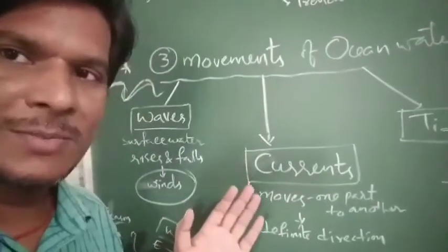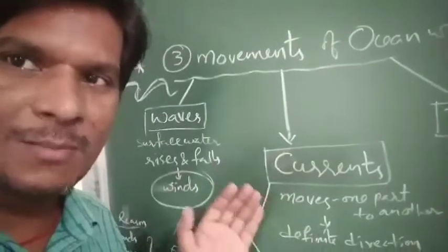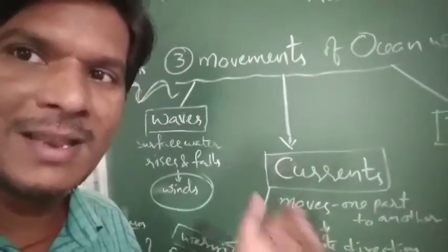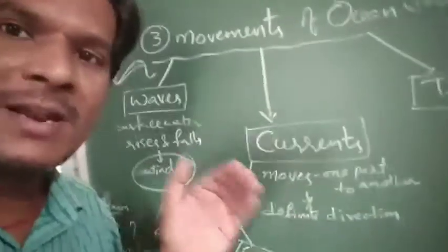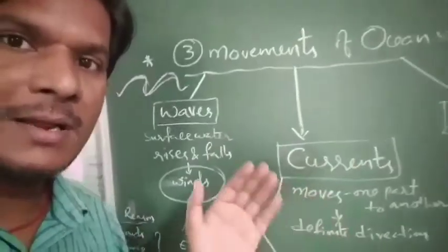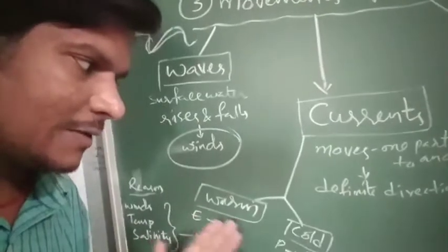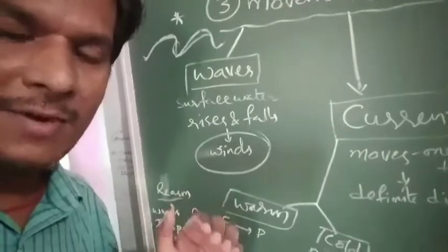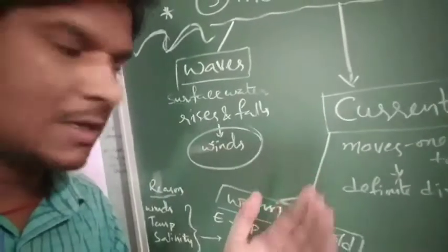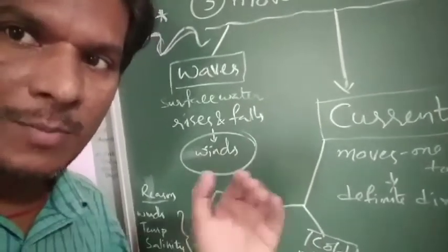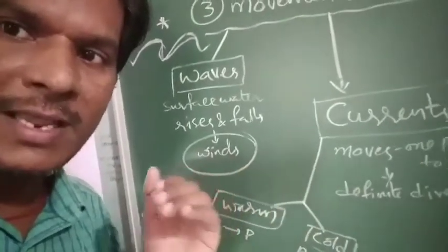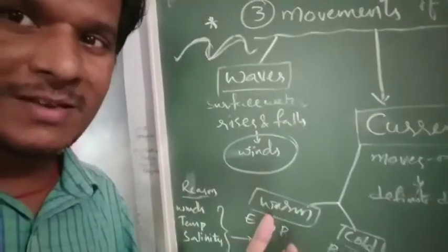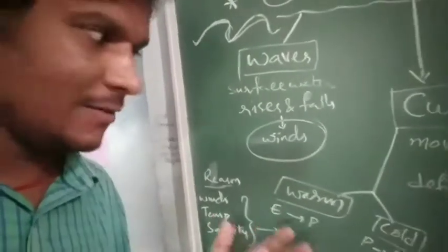Currents are when ocean surface water moves from one part of the ocean to another like a stream, but in a definite direction. There are two types: warm currents and cold currents. Warm currents are seen in the equatorial region, moving from the equator towards the polar region, and cold currents are seen in the polar region, moving from the poles towards the equatorial region.